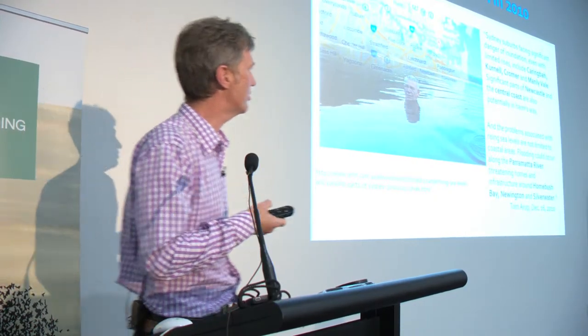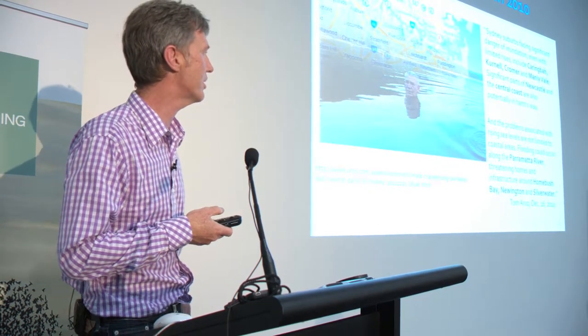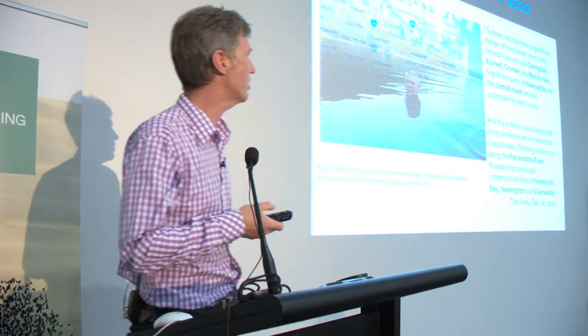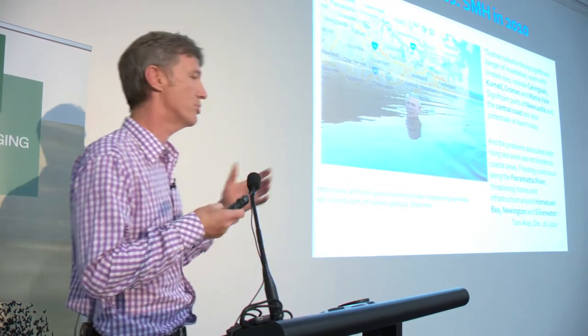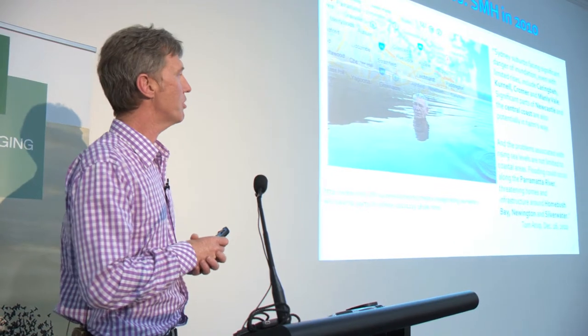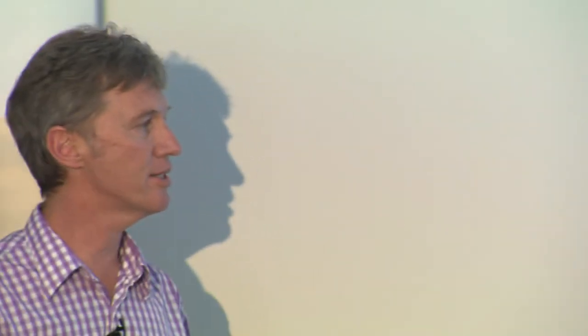They're probably some of the suburbs that if anybody knows Sydney, you'd expect. But also other nearby areas — significant parts of Newcastle, the second largest city in New South Wales and seventh largest in Australia, and the Central Coast, the area between Sydney and Newcastle. But the problems associated with rising sea levels are not limited to coastal areas. There's recognition that it goes back from the coast into the catchment areas along the Parramatta River. It goes into low-lying areas threatening homes and infrastructure in suburbs like Homebush Bay, Newington and Silverwater — areas of slightly lower socioeconomic status compared to the coastal areas. Silverwater has a prison; Homebush Bay has Olympic facilities.